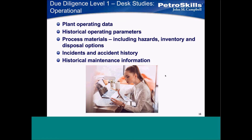So, due diligence — operational. In your office, what you want to do is get access to the plant operating data, historical operating parameters, all the process materials utilized out there, incident and accident history, and historical maintenance. Historical operating parameters: if you compare them with plant operating data and see a particular heat exchanger has a high pressure drop across it, that probably tells you something. Or if there have been substantial temperature excursions, that also tells you something.